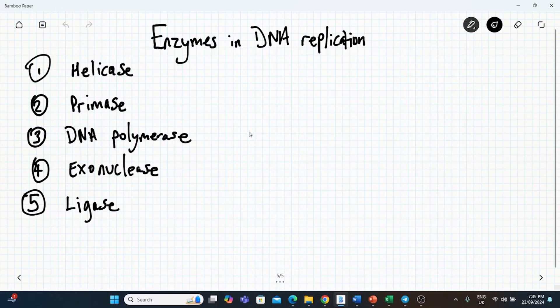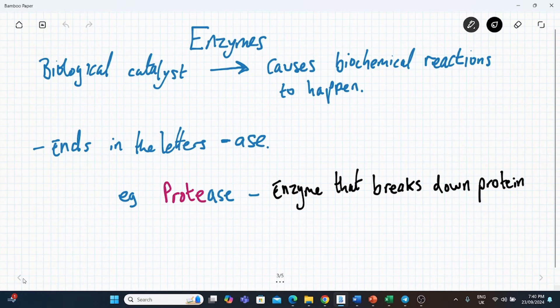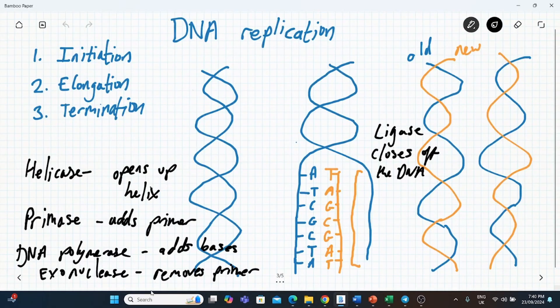This is a list of all of the enzymes. So again, helicase opens up the helix. Primase adds a primer so that the reaction can begin. DNA polymerase adds bases. The exonuclease removes the primer. And then finally, the ligase closes off the DNA. So you end up with two distinct strands. And that's it. I hope that made sense for you. Thank you very much for watching and goodbye.